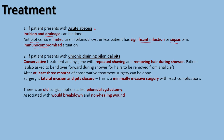For patients presenting with chronic draining pilonidal pits, conservative treatment is tried for three months. This includes repeated shaving of the anal area to remove excess hair, reducing hair tufts in the pits and decreasing inflammation, which can improve the patient's signs and symptoms.